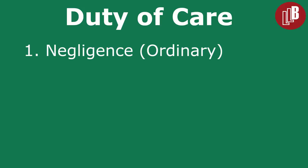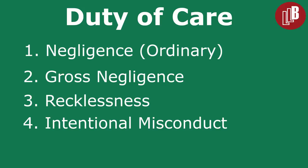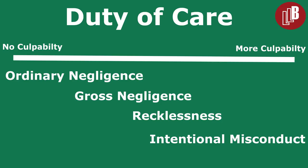Those four categories are: ordinary negligence, gross negligence, recklessness, and intentional misconduct. Imagine these four are on a continuum. The least offensive is ordinary negligence, moving to gross negligence, on to recklessness, and finally the worst conduct is intentional misconduct. Most corporate negligence falls in the ordinary negligence category.